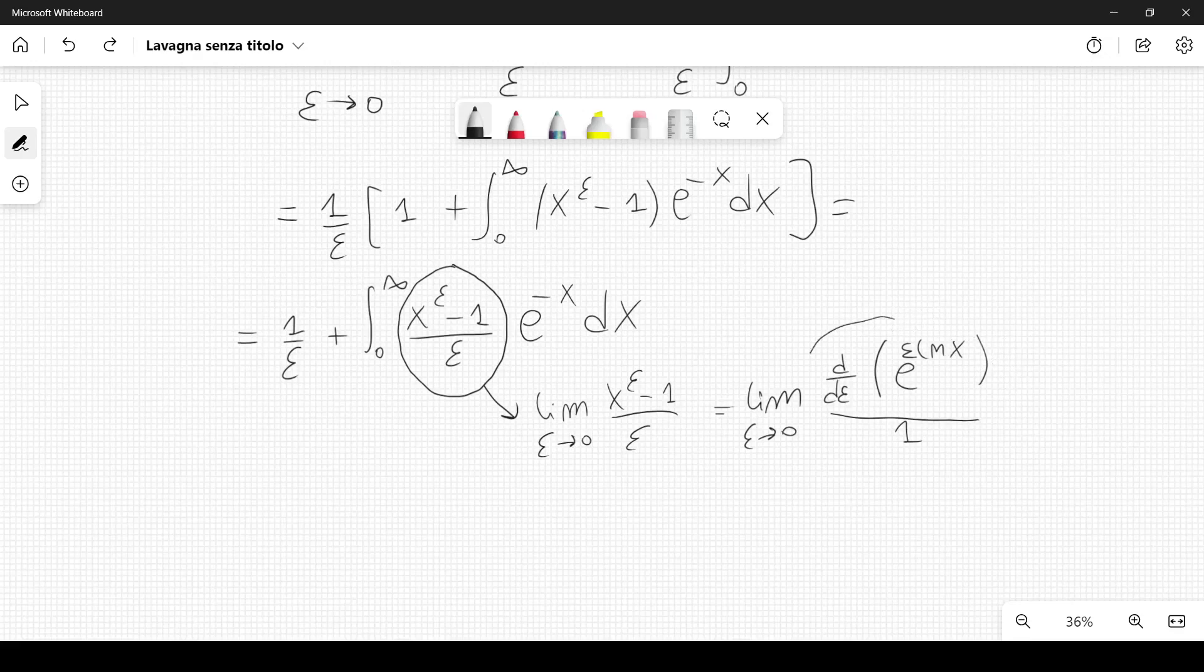So if I take this derivative, that's e to the epsilon ln x times ln x. When I set epsilon equal to 0, I get ln x.